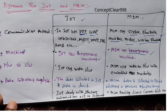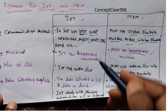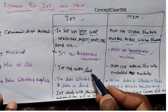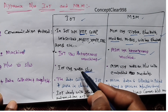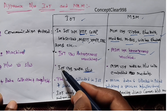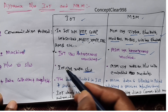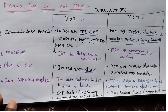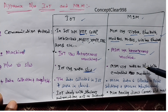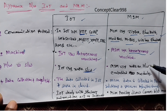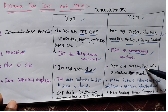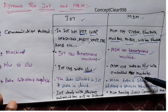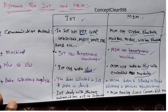The third aspect is hardware versus software. In IoT, we use more software-based devices. In M2M, we use more hardware with embedded modules.